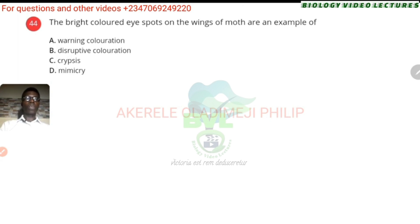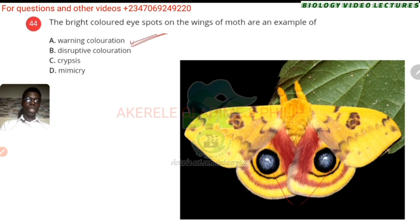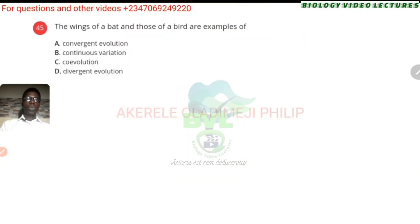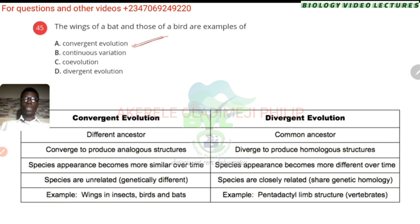The bright colored eyespots on the wings of a moth are an example of warning coloration. They use that to warn off predators — it makes them look dangerous. It is a warning coloration to make them appear dangerous to predators. The wings of a bat and those of a bird are examples of convergent evolution — they have different ancestors, because bat is a mammal and birds are aves. They have different structures but the same function — bats have skin membranes, not feathers, but it functions like a wing.